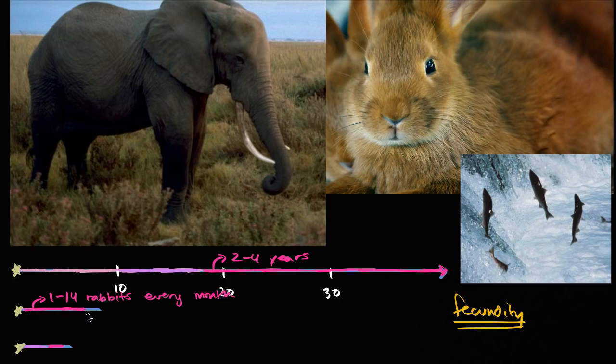So even though the lifespan of that female rabbit might be three, four, five, six years depending on the type, you can imagine if they're producing let's say 10 rabbits every month, they could produce 120 rabbits per year over several years.